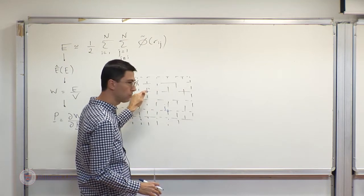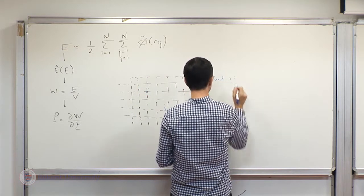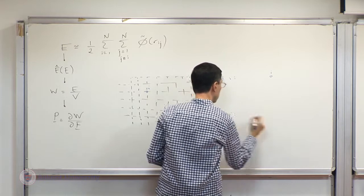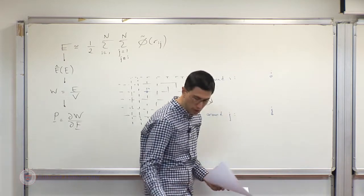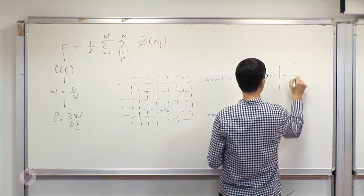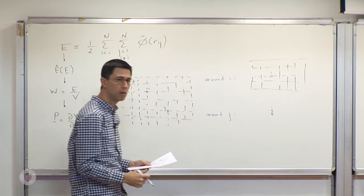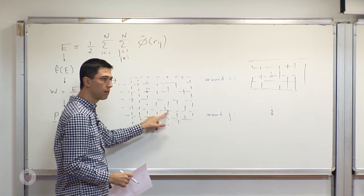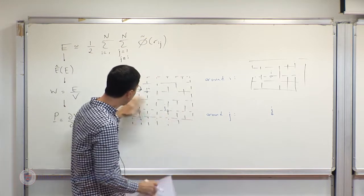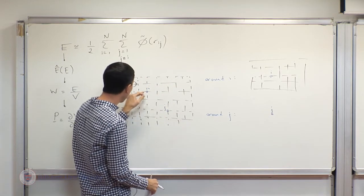Imagine sitting on atom i and looking around to see what you observe. Around i you see an atom, and similarly sitting on atom j, you look around and see a lattice that repeats itself to infinity. When you sit on j, you don't see anything different — you also see a lattice that extends to infinity.